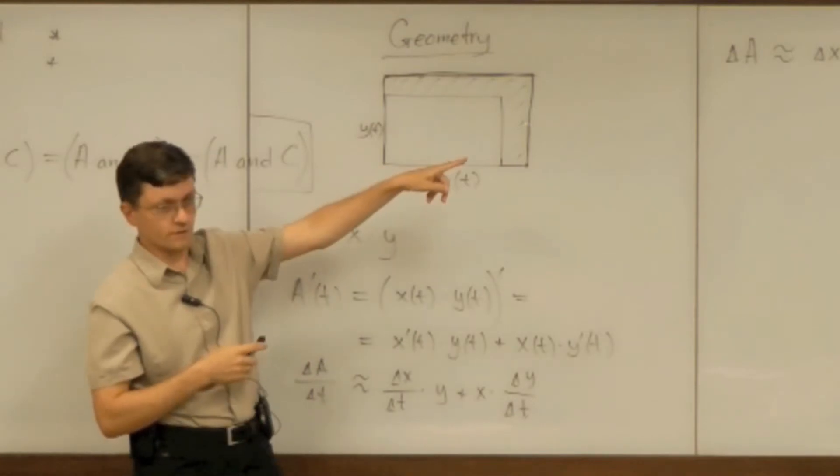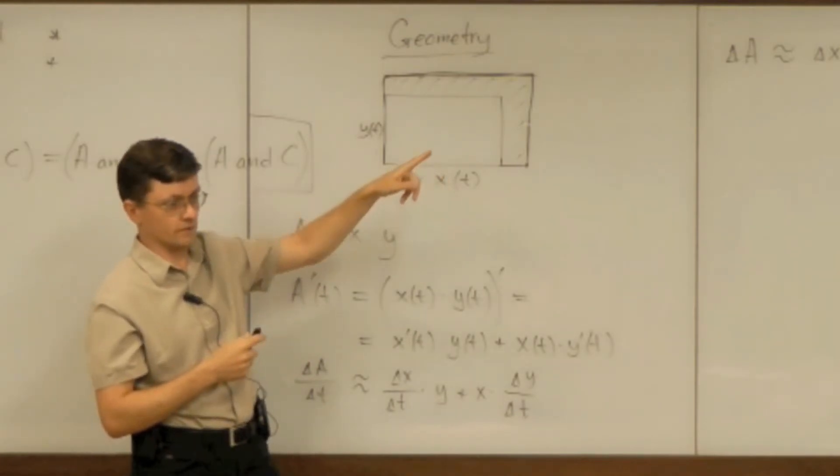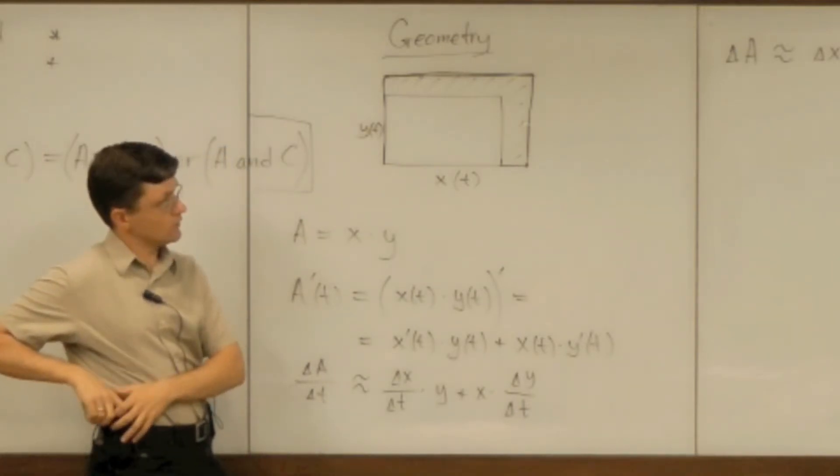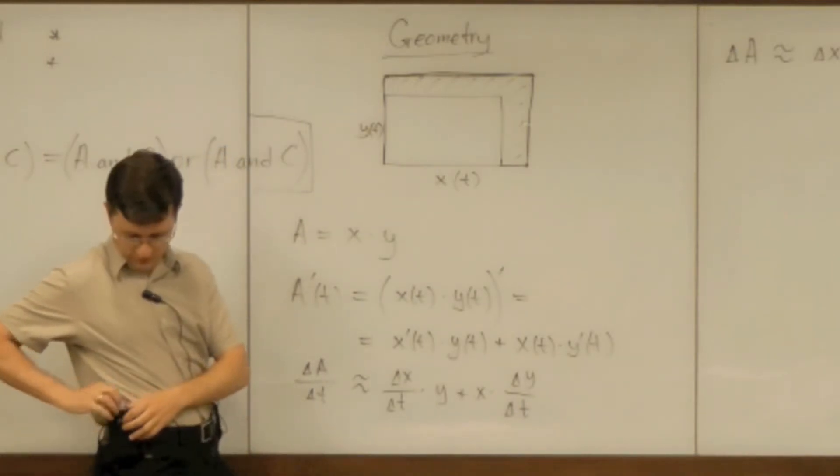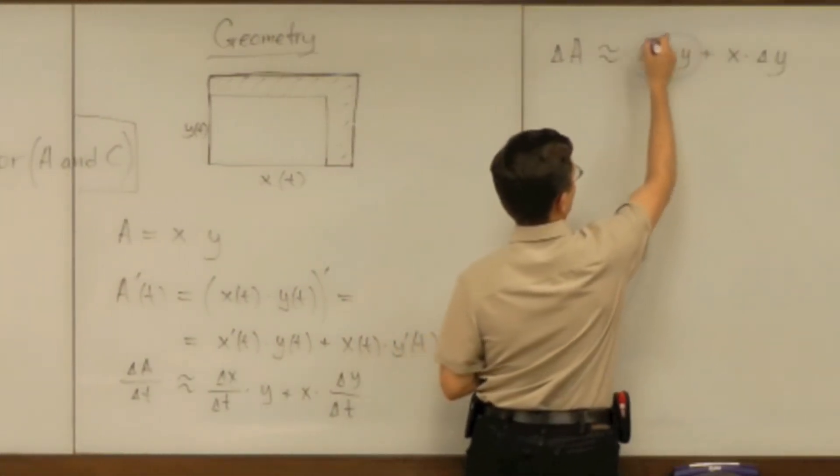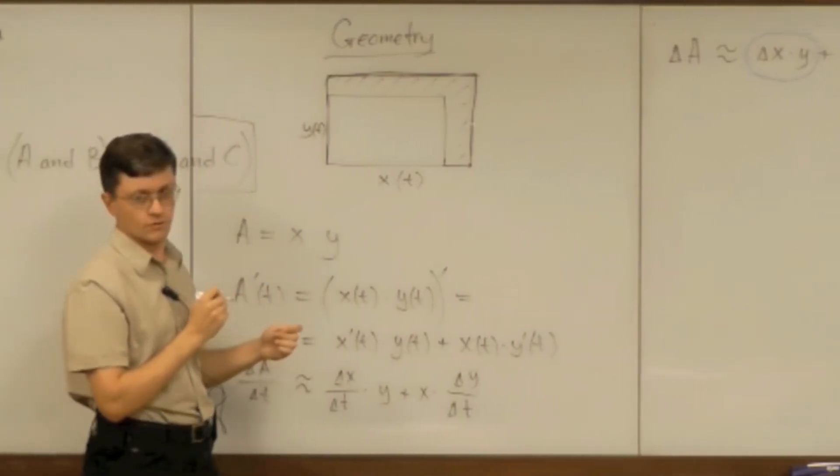Now what about the right hand side? Can we see that? What about delta x times y? What about this one? Where is it? On the picture.